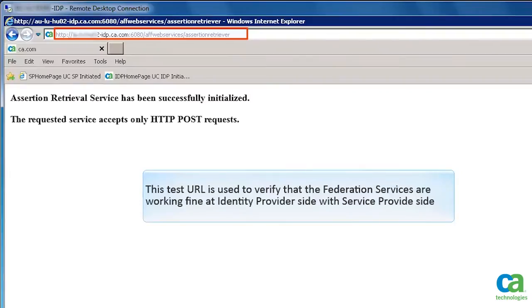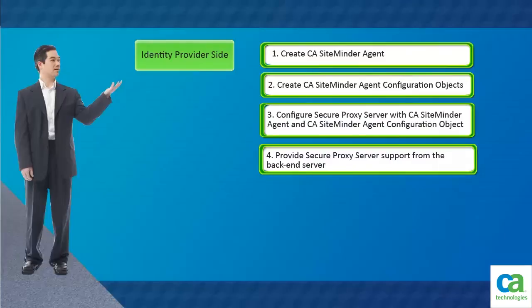In this scenario, this test URL is used to verify that the federation services are working fine at identity provider side with service provider side. After configuring Secure Proxy Server, we have verified that federation services are working as desired. The next task is to provide Secure Proxy Server support from the backend server.